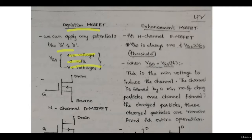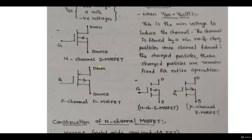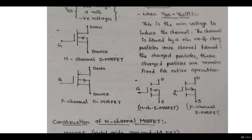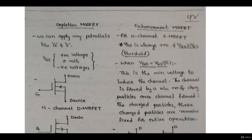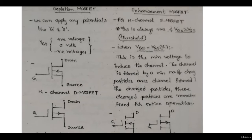In summary, for depletion type, VGS can be zero, positive, or negative. The symbol representation for depletion N-type and P-type MOSFETs differ by the direction of the arrow: for N-type the arrow points inward, and for P-type the arrow points outward.